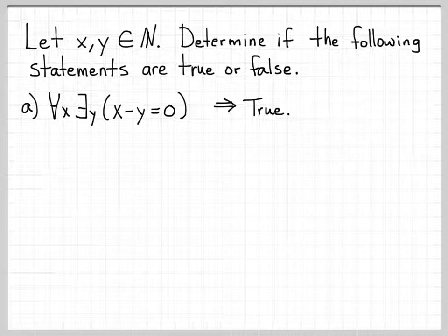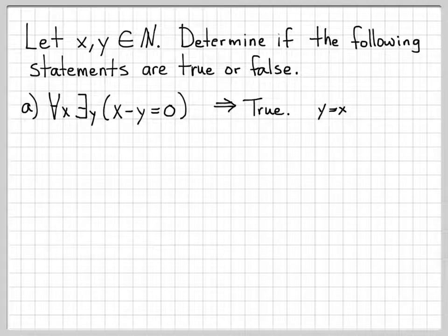And there obviously does. When x is 4, I can choose y equal to 4, which is in the natural numbers, and then 4 minus 4 equals 0. And then I can do that no matter what value of x is picked. So for all x, I would choose y equal to x and the statement would always be true. That was pretty easy.